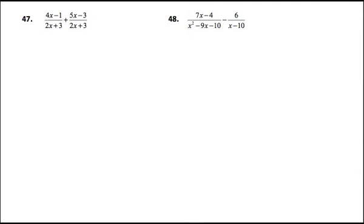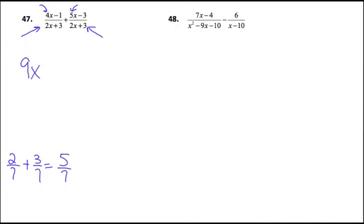When you add and subtract algebraic fractions, you have to have a common denominator. In number 47, the denominators are already alike. Just like 2 sevenths plus 3 sevenths equals 5 sevenths — you add the numerators and keep the common denominator. So you add 4x and 5x to get 9x, then combine minus 1 and minus 3 to get minus 4. That's your numerator over the common denominator. Nothing factors further, so that's the answer.